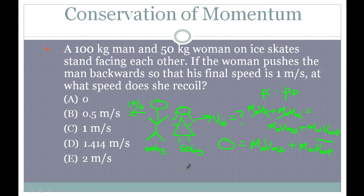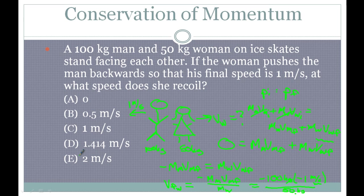Rearranging, we get: final velocity of the woman equals negative mass of the man times final velocity of the man, divided by mass of the woman. Plugging in: negative 100 kg times negative 1 m/s divided by 50 kg — kilograms cancel — gives us 2 meters per second. So she's going to go in the opposite direction at 2 meters per second. Which makes sense: she has half the mass, so she's going to have twice the speed.